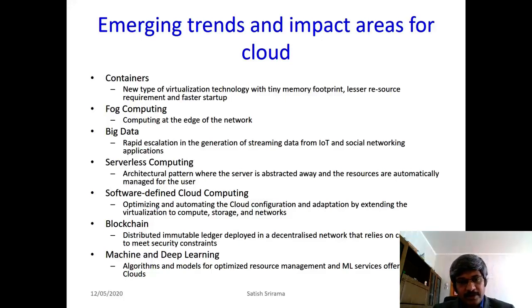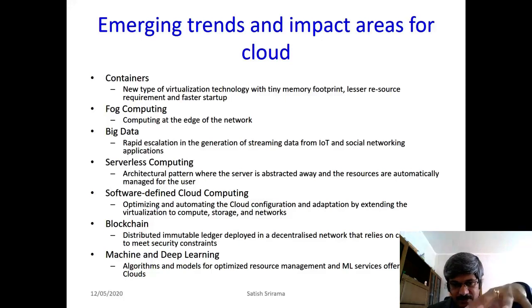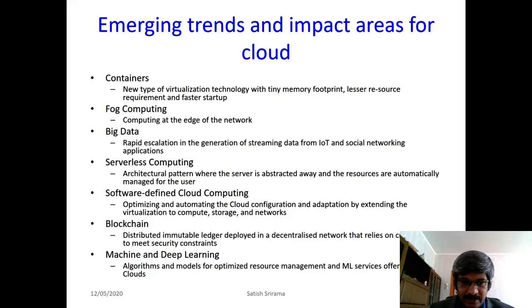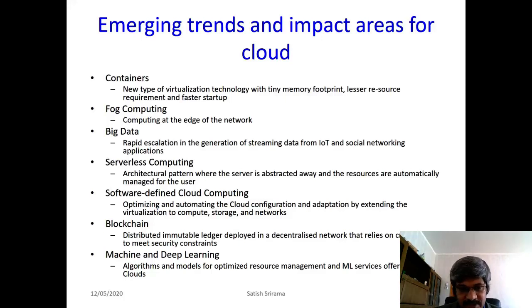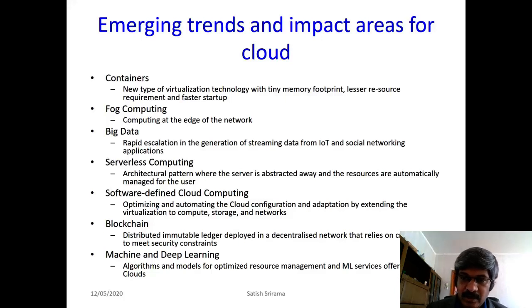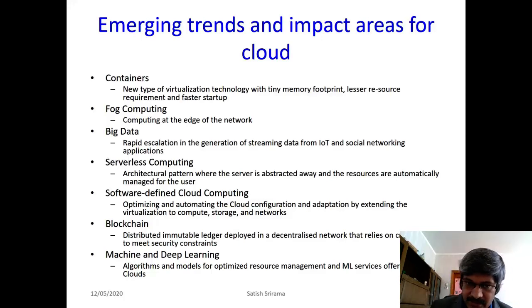Software-defined cloud computing is about optimizing and automating cloud configuration and adaptation by extending virtualization to complete storage and network infrastructure, giving a centralized controller a complete view of the network. Blockchain — a distributed immutable ledger deployed in a decentralized network relying on cryptography — is another emerging trend. Machine and deep learning algorithms are being used for optimizing resource management, and machine learning services are now being offered directly from the cloud.